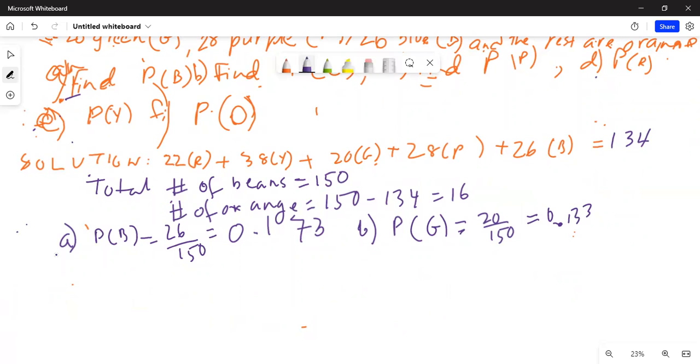Part C, find probability of purple. How many purple are there? Purple is 28 out of 150, so that equals 28 divided by 150.